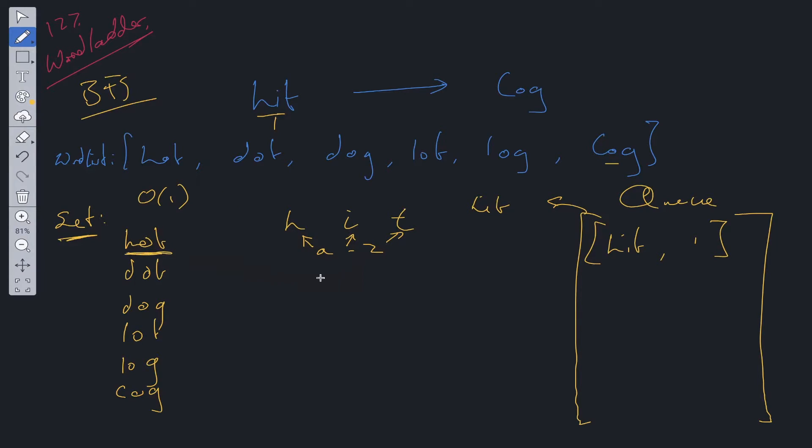Hot is one solution. Hit can go to hot where we update only one letter. Now that we've found this we can add this to queue and we can also update the count.